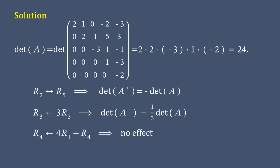The final elementary row operation has no effect on the value of determinant. We combine all these derivations, and we get that the determinant of matrix A prime is negative 8. So that's it. Thank you for your attention.